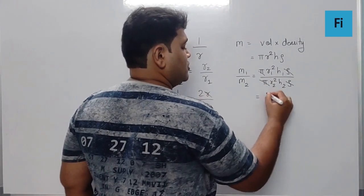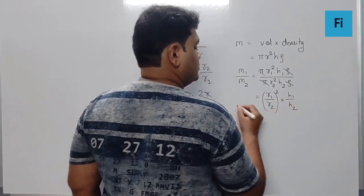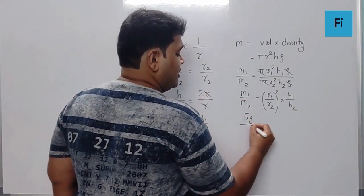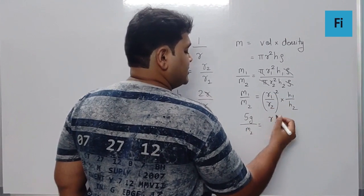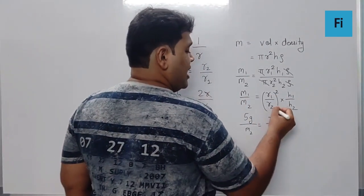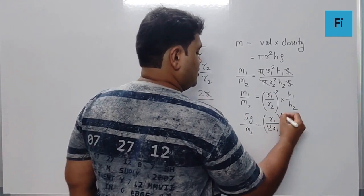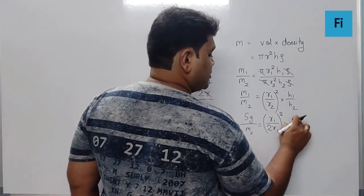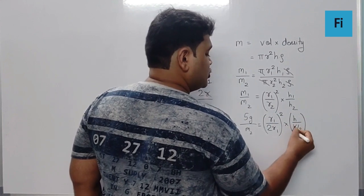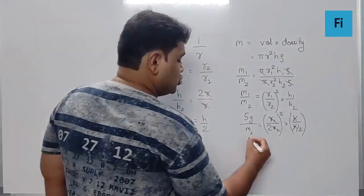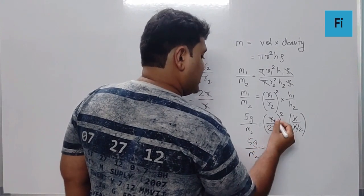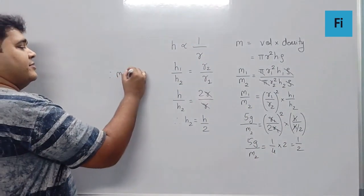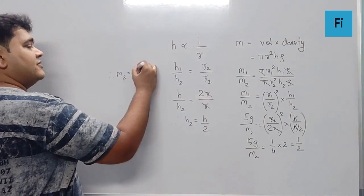We get (r₁/r₂)² × (h₁/h₂) = m₁/m₂. Now if we substitute the values: m₁ is 5 grams, m₂ is unknown, r₁ is r, r₂ is 2r, h₁ is h, h₂ is h/2. So h gets cancelled, r gets cancelled. We get 5/m₂ = (1/4) × 2, which is 1/2. So our final answer m₂ is 5 × 2, that is 10 grams.